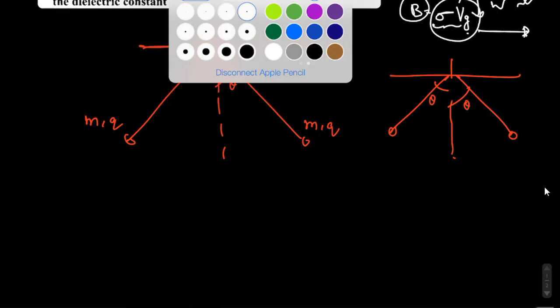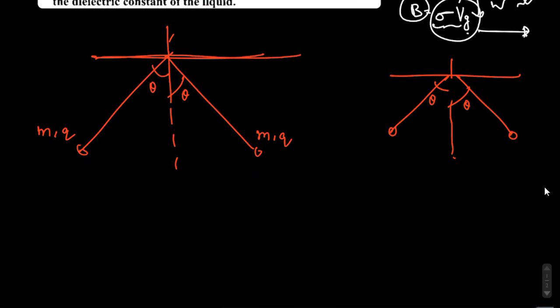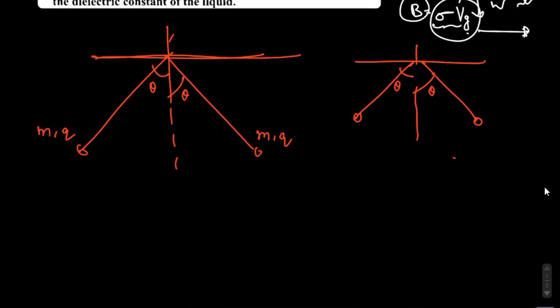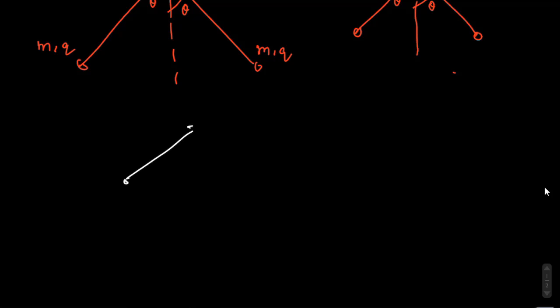Initially, when the body is not immersed, then the FBD - initially and finally we will make the FBD. Initially, there are forces of repulsion. The tension is there along with the Mg. The third is the electrostatic force of repulsion.